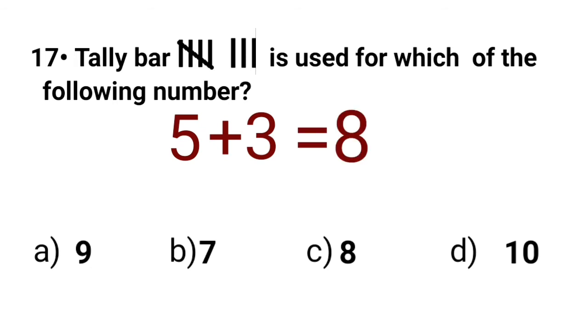Now, let's select the correct answer from the given options. Here, option A is 9, which is the wrong answer. Option B is 7, which is also wrong. Option C is 8, which is the correct option. So let's take option C.